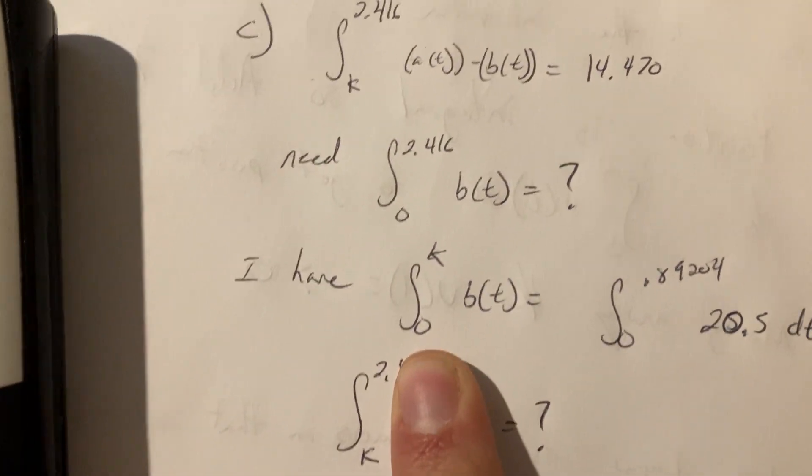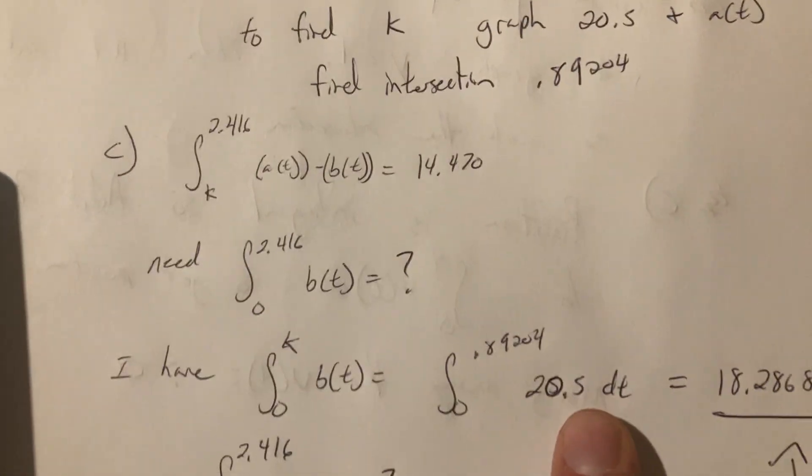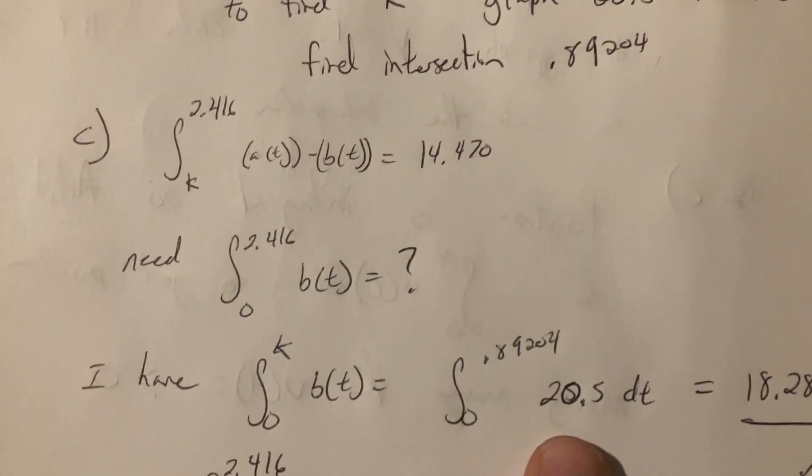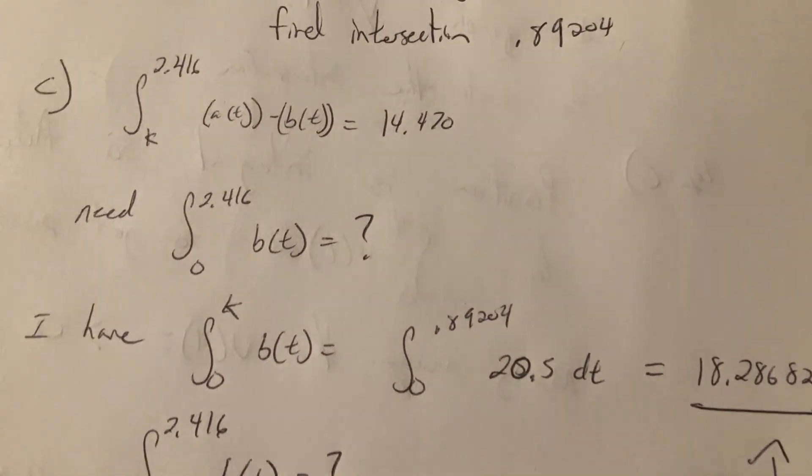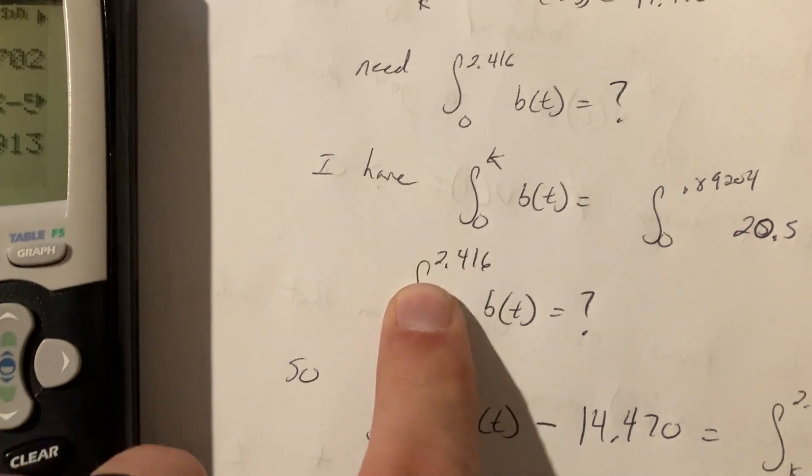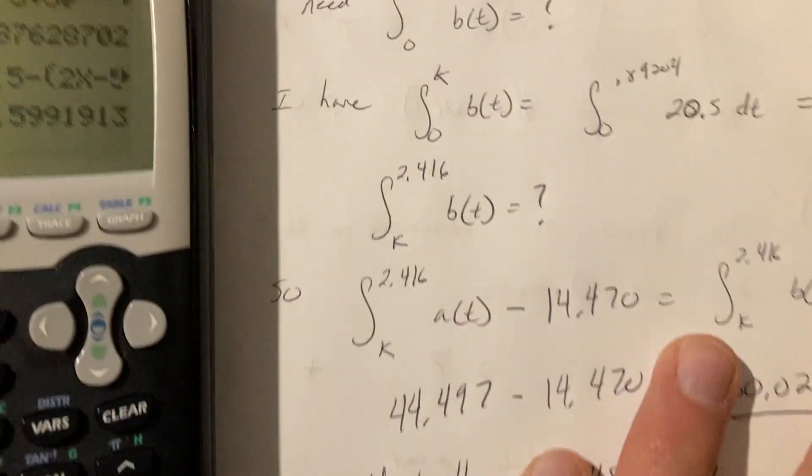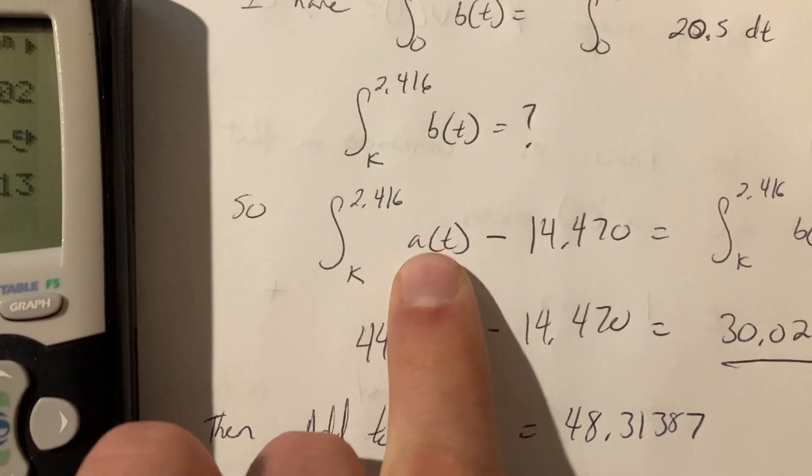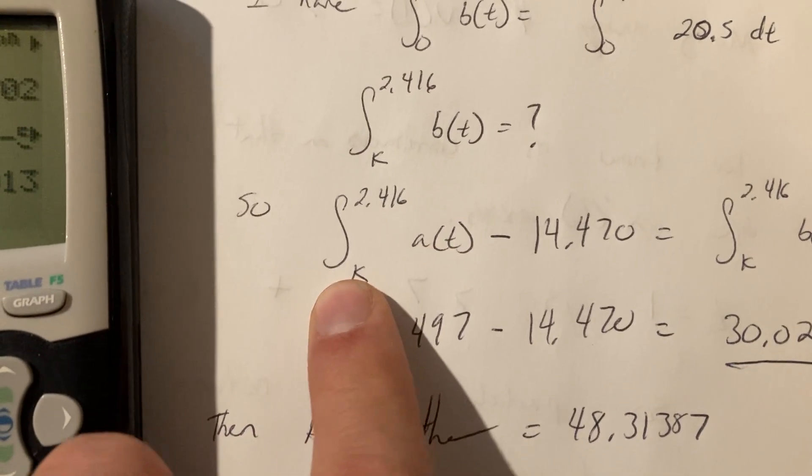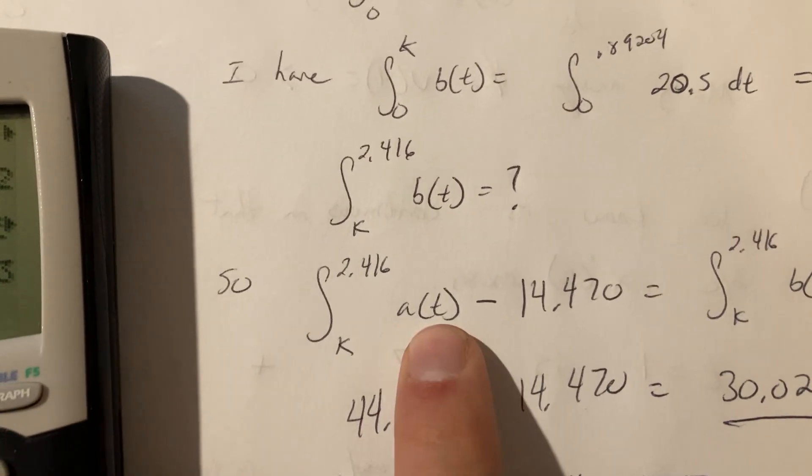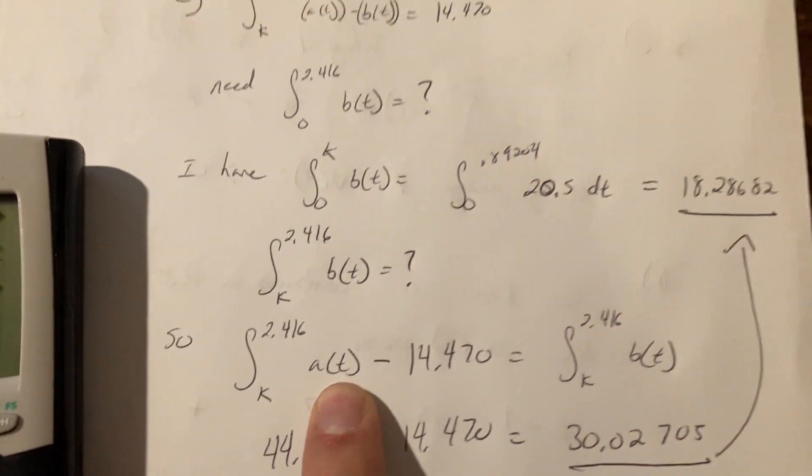Right here, because I know 0 to K is supposed to be 20.5, and I know what K is, so I use that, boom. So I need K to 2.416. That's what I need. But because I have, I know what again, I know what K is, it's 0.89204. I know what this function is, I could instead use this and be like hey, wait a second.